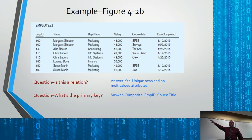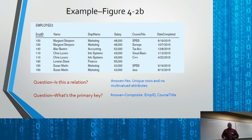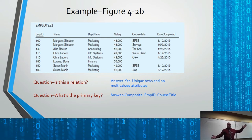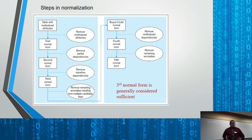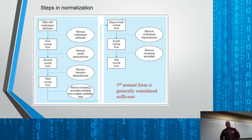What would happen is one record would be at 50,000 and one at 48,000 — now there are inconsistencies in the data because the update failed. Even in modern systems without transactions, that can happen. If you're updating 10,000 rows and the server explodes halfway through, only half the rows get updated. The goal is to avoid that. Here are the steps of normalization.